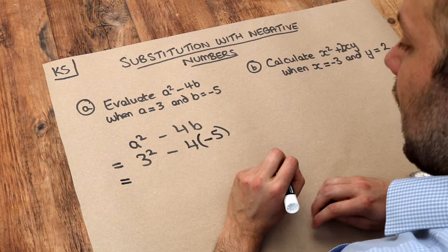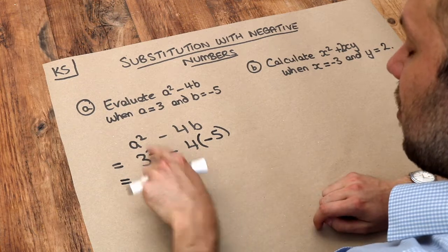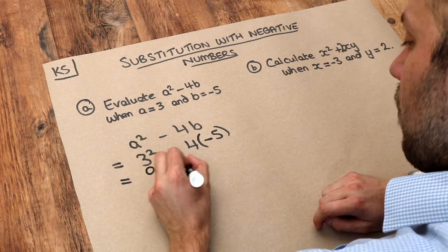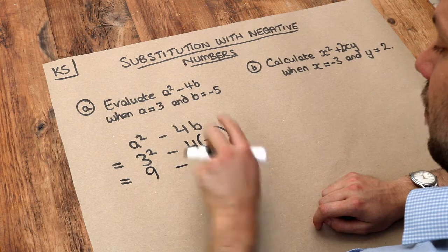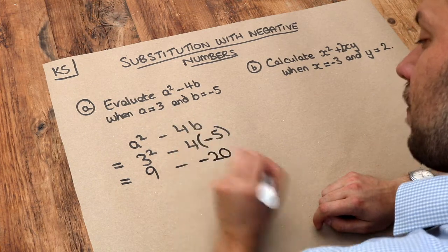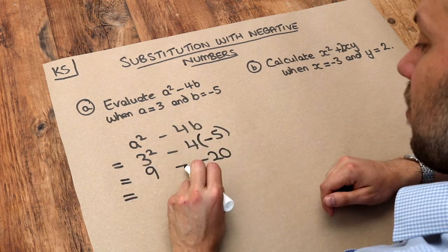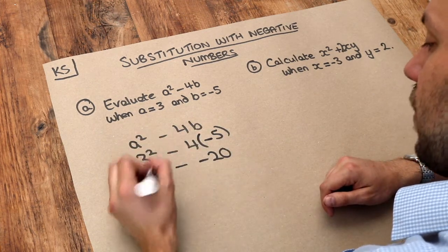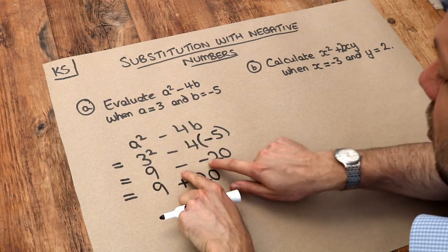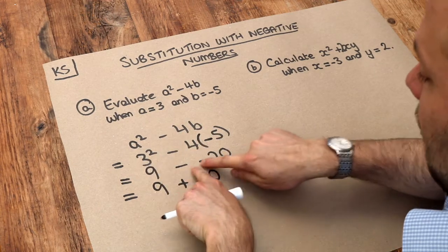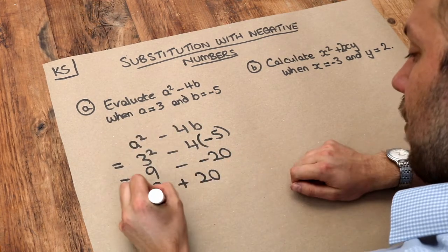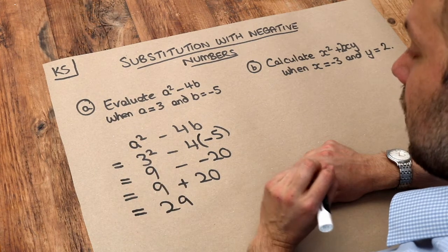Now let's evaluate each of these. 3 squared is 9, and then 4 times minus 5 is minus 20. So 9 subtract negative 20 is 9 plus 20 — remember two minus symbols next to each other become a plus — and that gives 29.